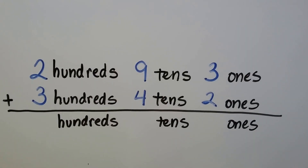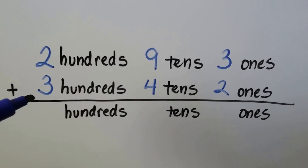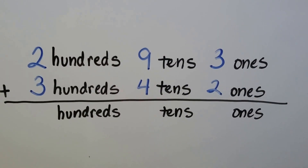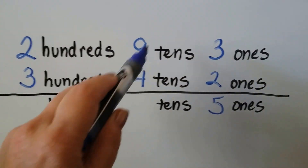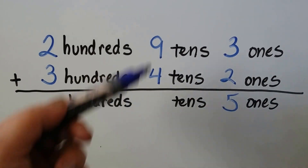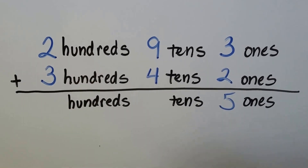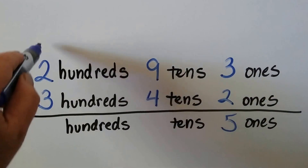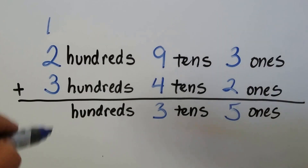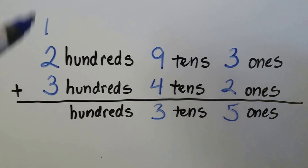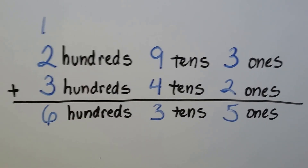Let's try this one. We're going to add two hundreds, nine tens, and three ones with three hundreds, four tens, and two ones. We start at the ones place: three plus two is five, so we have five ones. Nine plus four — we start with the nine and count up four: nine, ten, eleven, twelve, thirteen. We regroup the one and put the three down here. We add the hundreds place: three, four, five, six. Six hundreds, three tens, and five ones.